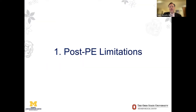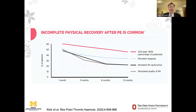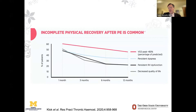When I say post-PE limitations, there are many. As most of us here tonight know, well over 60% of folks have some sort of limitation following a pulmonary embolism. Using VO2 max as a measure, well over 60% will have some limitation — generally using 80% as the cutoff. These limitations can persist for many months or even years, with persistent dyspnea and persistent RV dysfunction. Post-PE syndrome can certainly decrease quality of life.